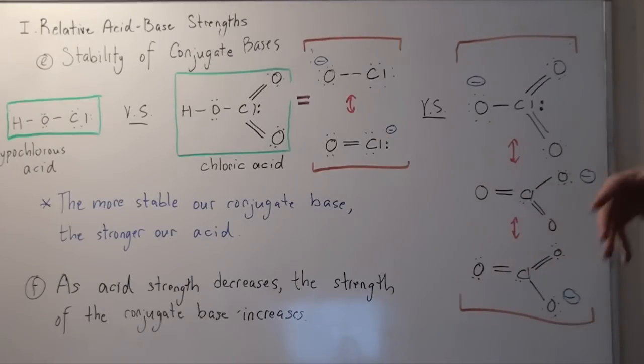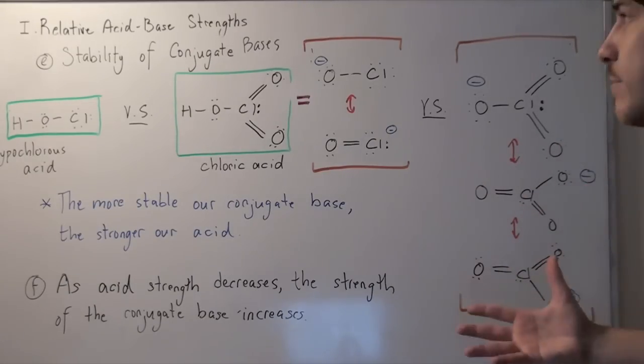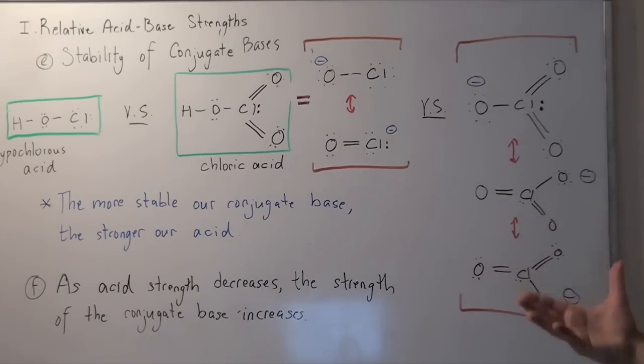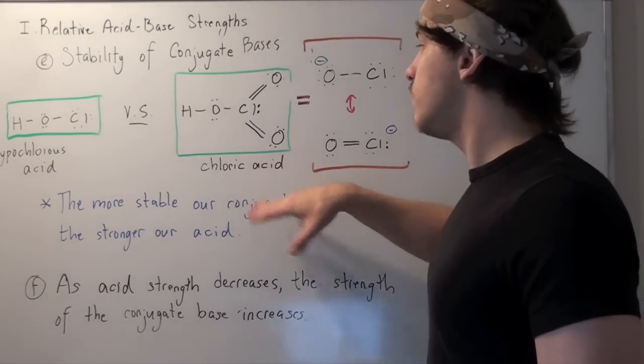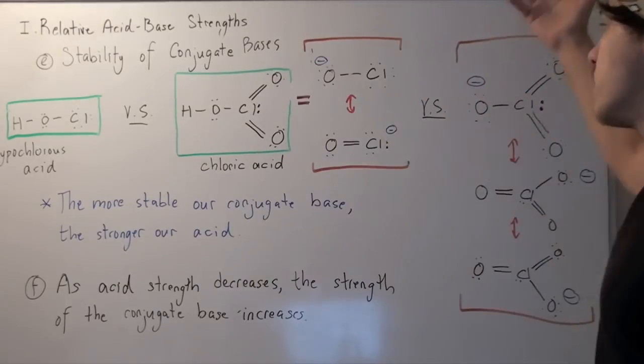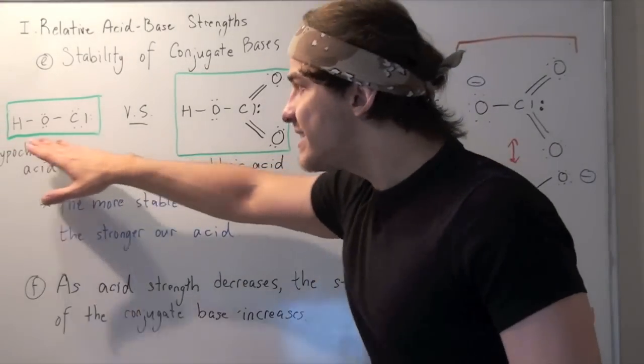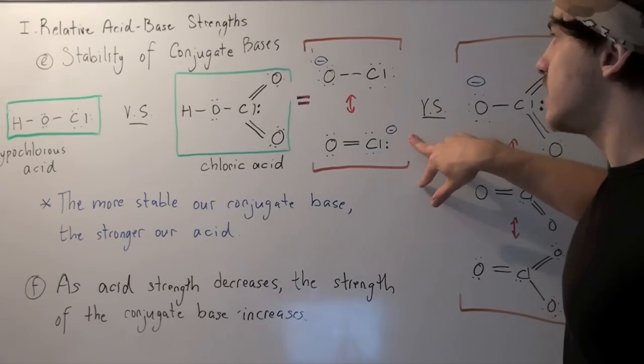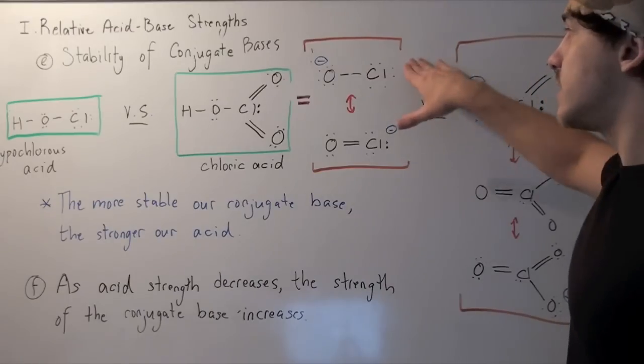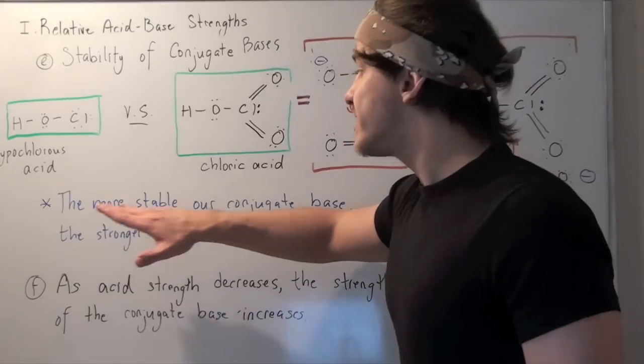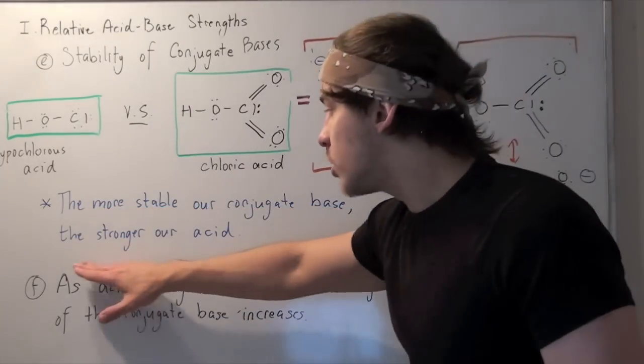Whenever we have more resonant stabilization, that means we have a more stable conjugate base. So this guy will exist and it will be more likely that it will exist than this guy. And therefore, chloric acid will be more likely to dissociate and to form this state, than this guy. This guy will be less likely to dissociate because its conjugate base is only stabilized by two states versus four states in this case. Once again, the more stable our conjugate base is, the stronger our acid.